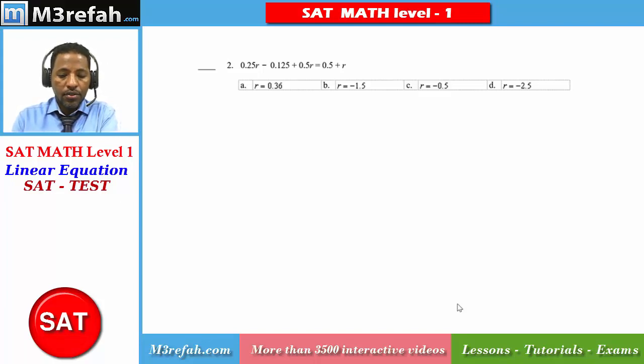First collect the terms containing the variable r on the left side. You will be doing 0.25r plus 0.5r. These are the terms on the left side, equal to.